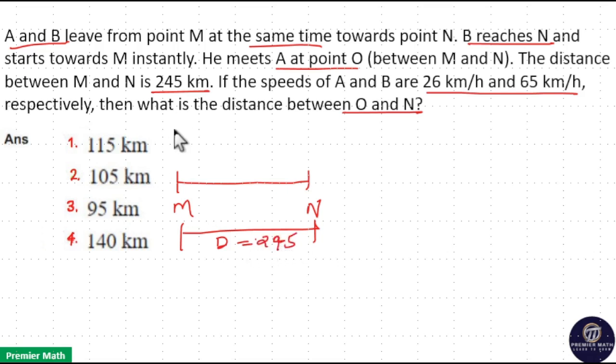Now A and B start from the same point at the same time towards point N, and B reaches point N and returns towards point M. While returning, he meets A at point O. So this is point O, and we have to find out what is the distance O to N. I will take it as X.